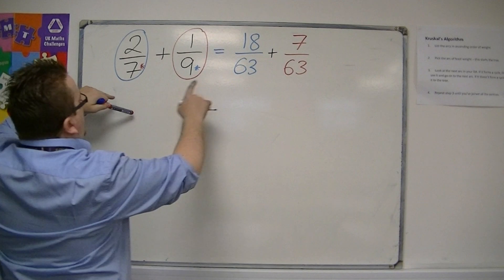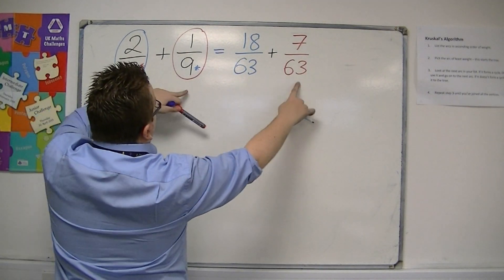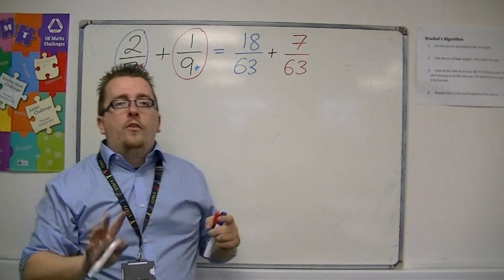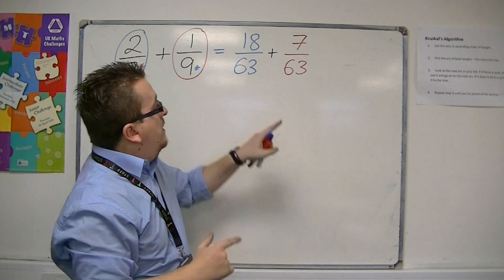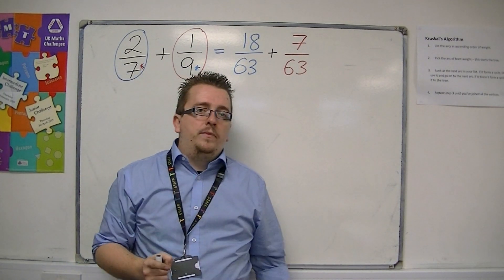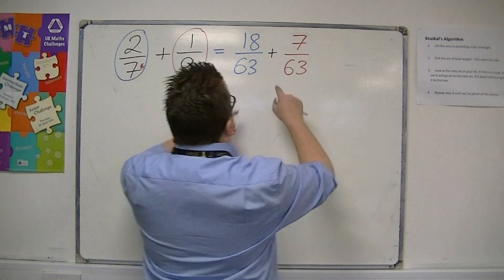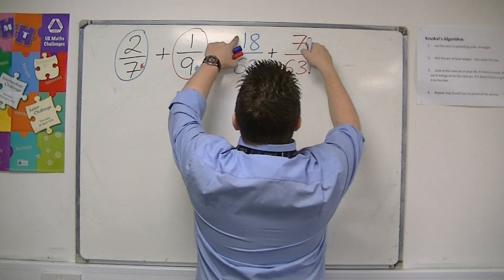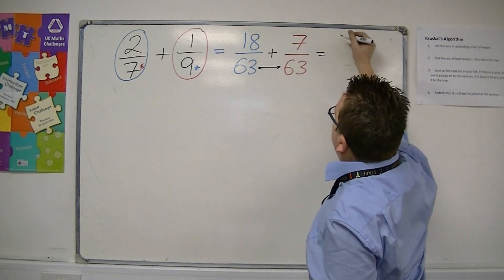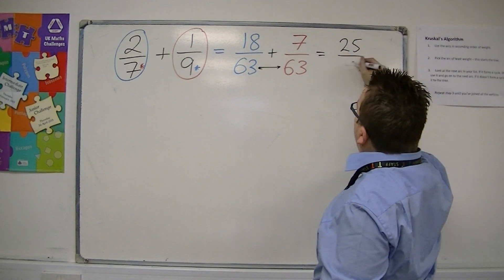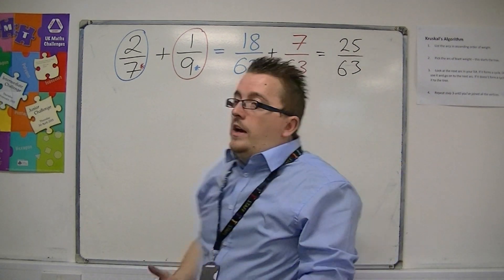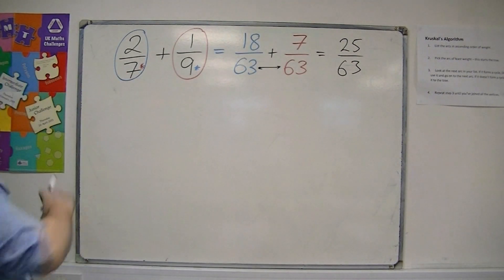So that means this fraction is equivalent to this one. So we now have two equivalent fractions, and the brilliant thing is that the denominators are the same. And when they are the same, we can just add the top two numbers. 18 and 7 is 25. And that's how we can add two fractions together.